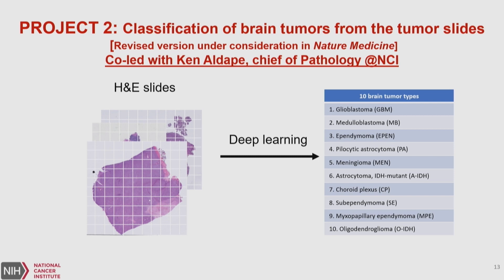What pathologists have done for 100 years is look at slides and classify tumor slides into their types and subtypes. This classification is hugely important and needs to be done correctly, because it affects prognosis, clinical treatments, and everything the oncologist does in discussions with patients from that diagnosis forward.